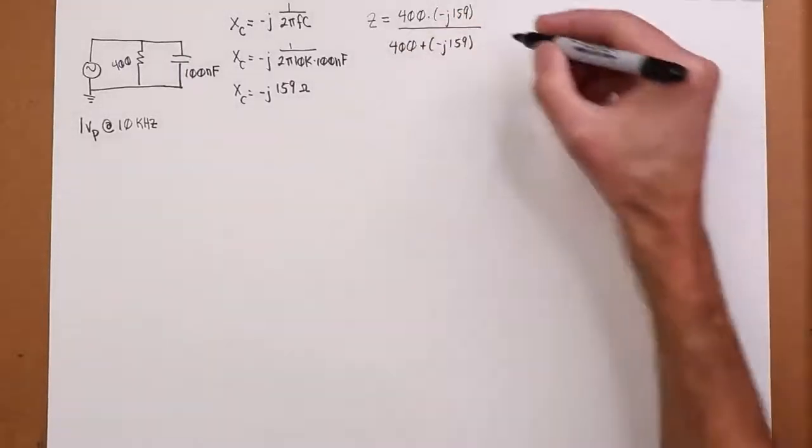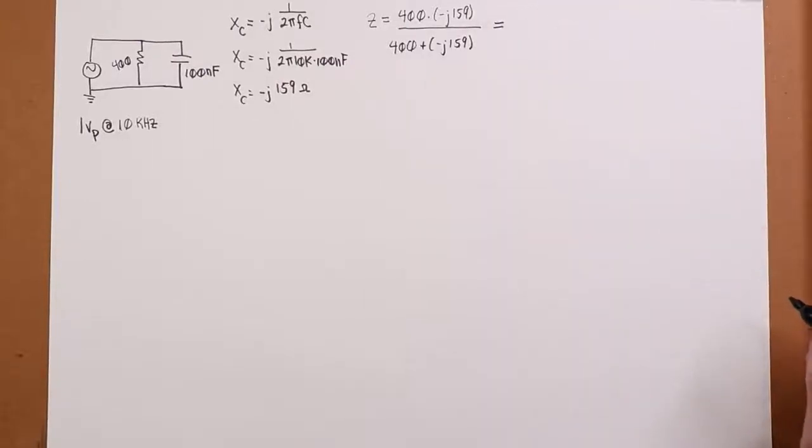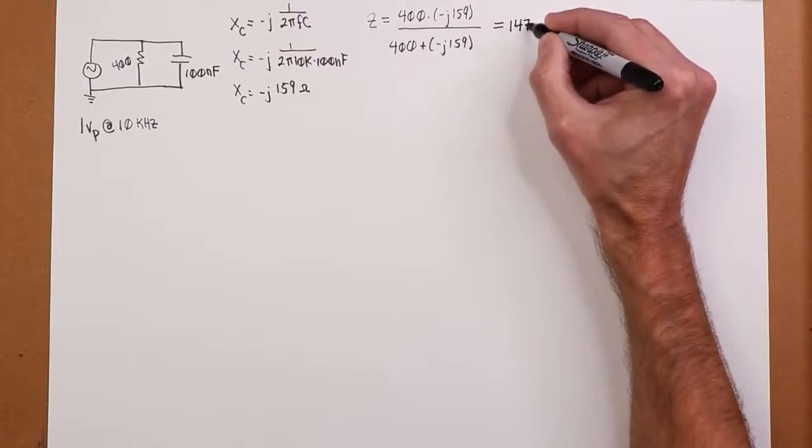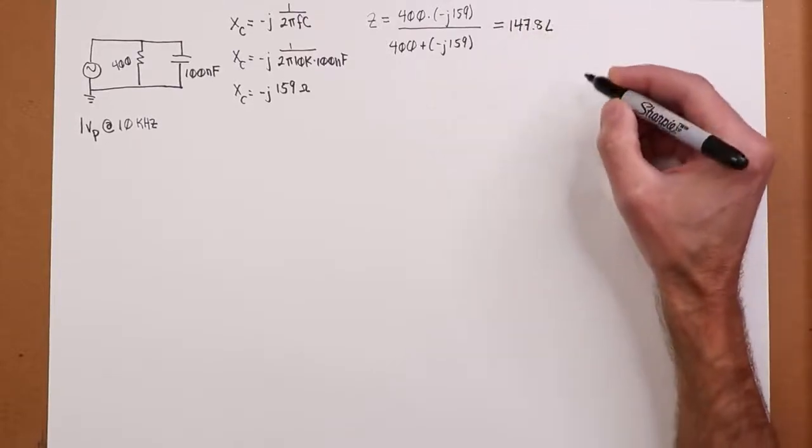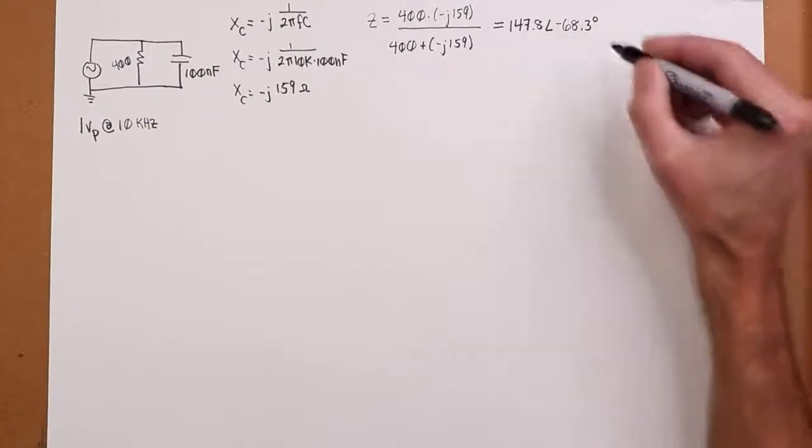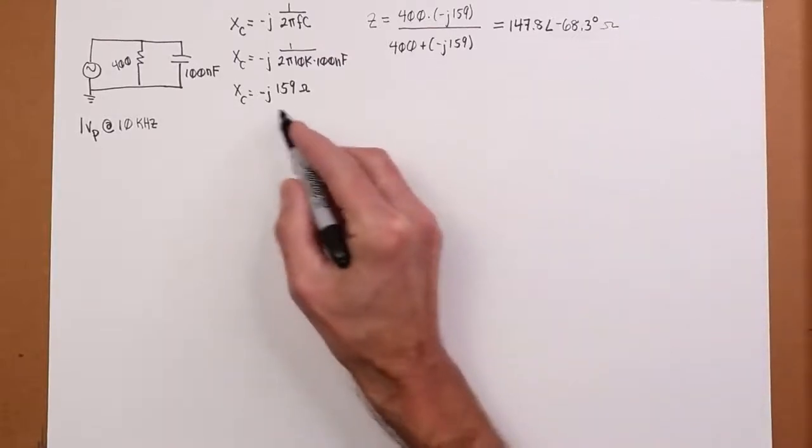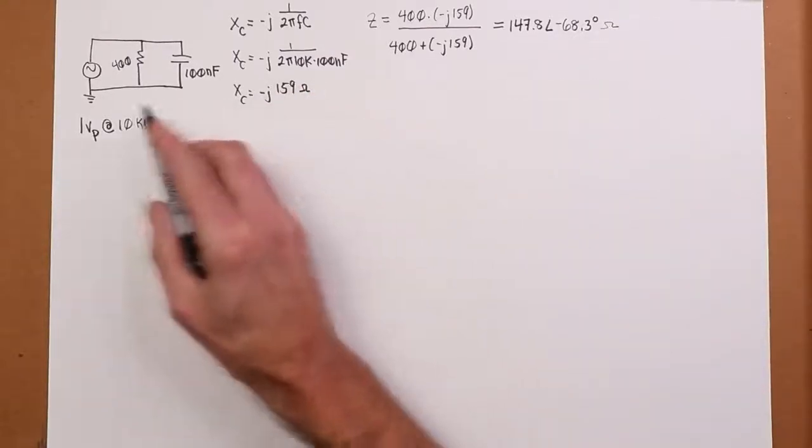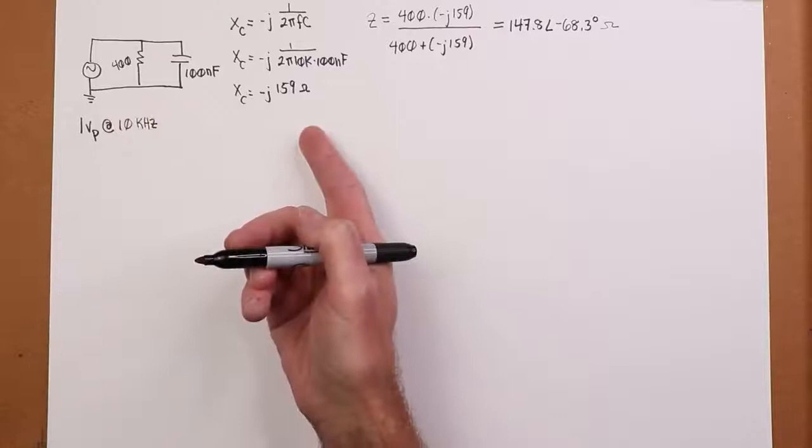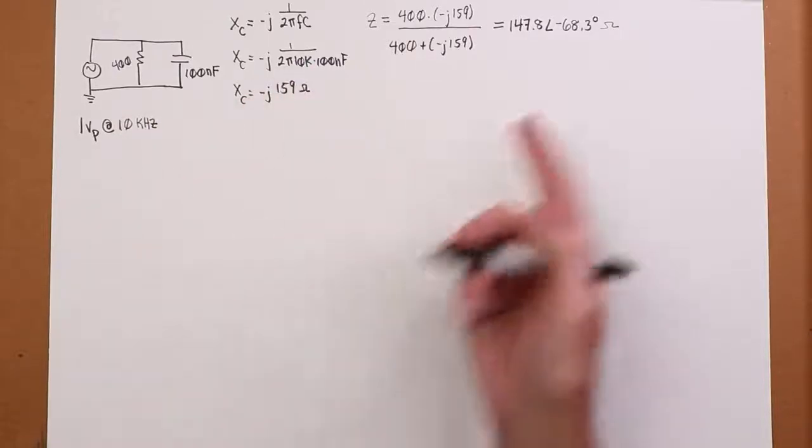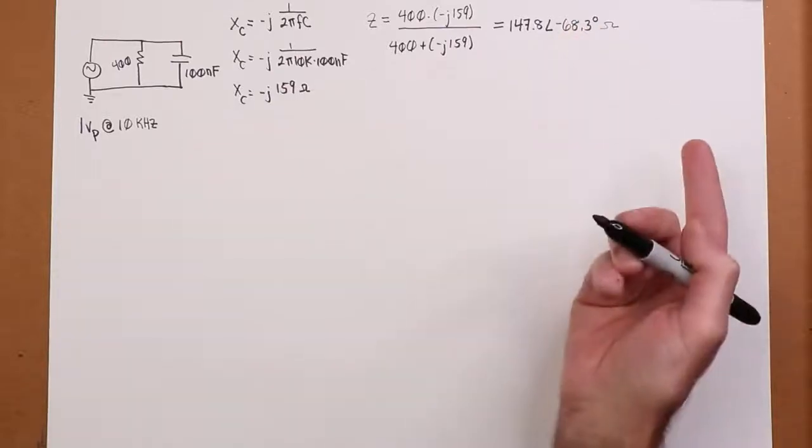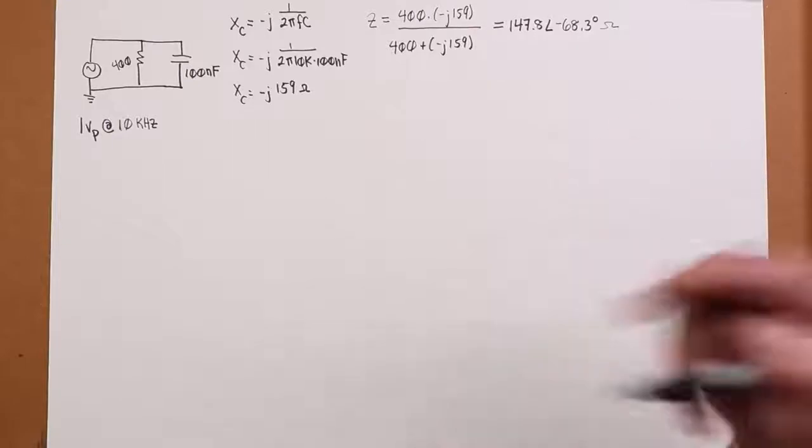Okay, so when we work this through, we get an impedance out of this equal to 147.8, that's the magnitude, at an angle of negative 68.3 degrees. Now that would make sense. If you look at these values, obviously the capacitive reactance dominates the pair, just like when we would have two resistors. If you had a 400 ohm resistor and a 159 ohm resistor, it's that smaller one that dominates. So that's what we see here. The angle is closer to minus 90 rather than zero, so we would say the circuit is more heavily capacitive.